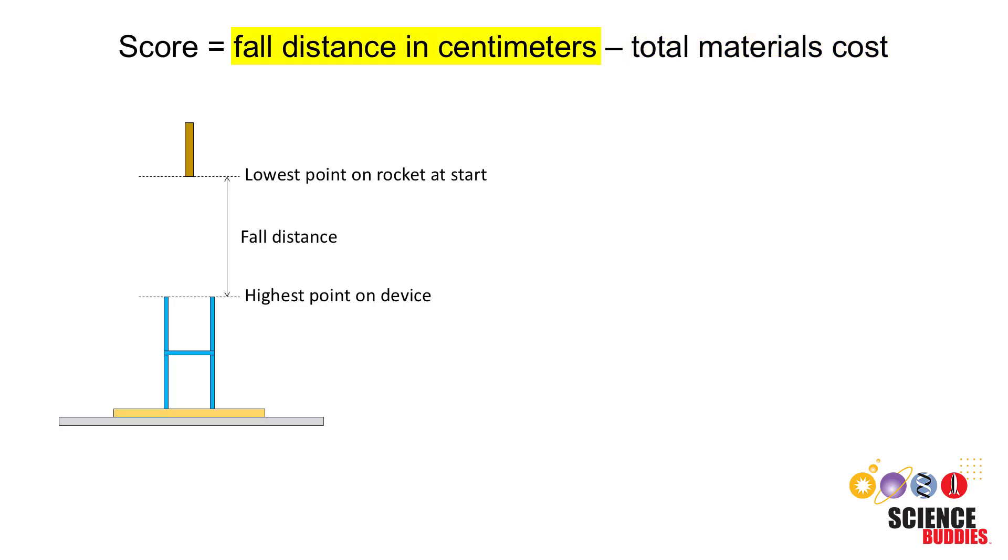The fall distance is the vertical distance between the lowest point on the rocket, including any attachments at the start, to the highest point on your device.